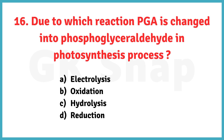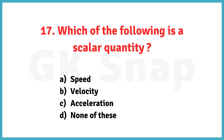Due to which reaction is PGA changed into phosphoglyceride in the photosynthesis process? The correct answer is option D: reduction.